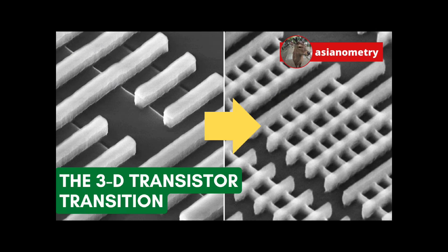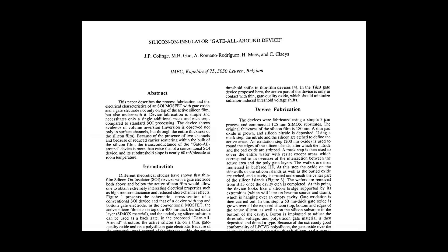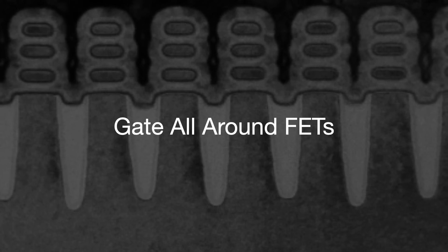The gate all around, or GAFET, iterates on the concept of the FinFET by wrapping the gate entirely around the channel. Ergo the name gate all around, which first came about in a 1990 paper by Jean-Pierre Colinge, M. H. Gao, A. Romano, and others. Actually, the name describes less a specific transistor structure but rather a whole class of them. The big similarity between them being that their gates completely surround the channel rather than on just three sides. Within the overall GAFET category, we have two big subcategories. Nanowires and nanosheets.